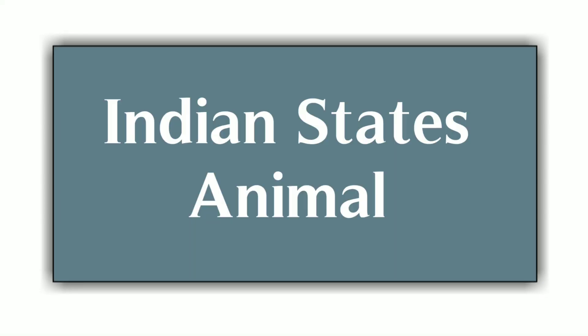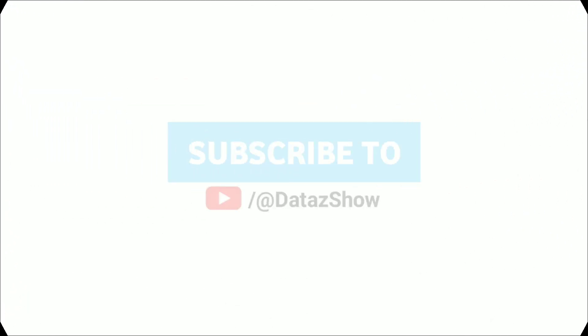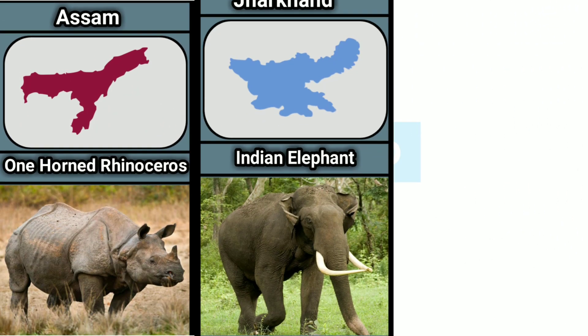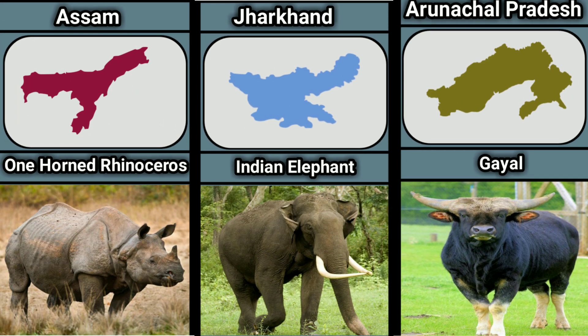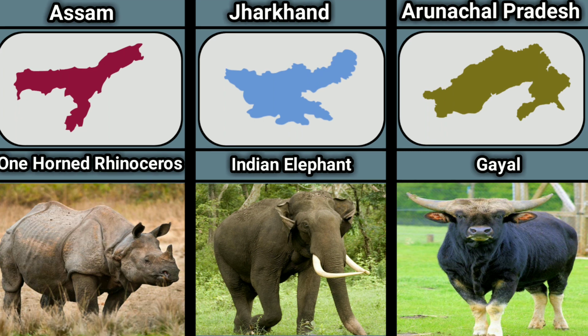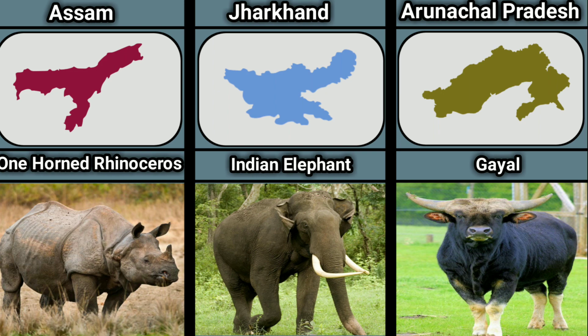Indian State Animal. Assam — One-Horned Rhino (Dalhor).